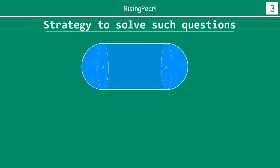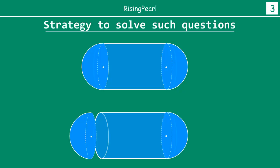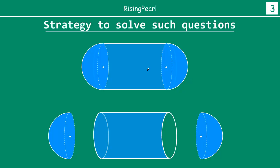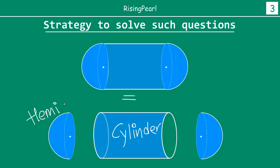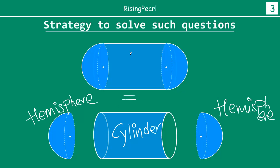Now let's visualize. Here is a shape that is given to us. Whenever you get a question like this, you should be able to visually see that it can be broken out like this — and similarly, this part can be broken out like this. Essentially, this complex shape is made up of a cylinder and two hemispheres.